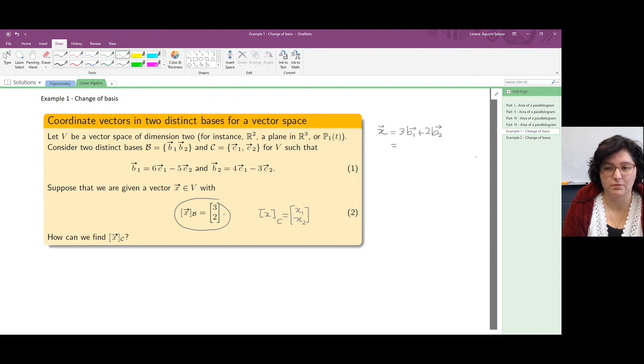Those weights will be coordinates of X with respect to C. So here we have 3 times B1, and B1 is 6C1 minus 5C2. And then plus 2 times B2, and B2 is 4C1 minus 3C2.